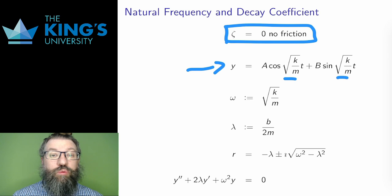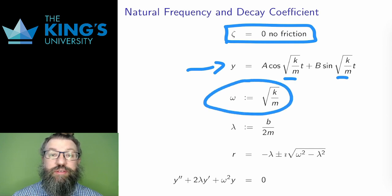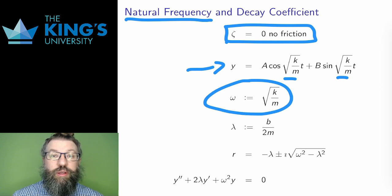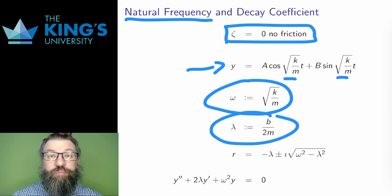As before, the homogeneous solutions with no friction are sine and cosine waves with frequency coefficient root K over M. If there were no friction, this is how the system would naturally oscillate. Therefore, this frequency coefficient is called the natural frequency of the system. I'll use the Greek letter omega to label this natural frequency. Then finally, I'll define lambda to be B over 2m. In the underdamped solutions, negative lambda is the coefficient in the exponential decay, so I'll call this the decay coefficient.